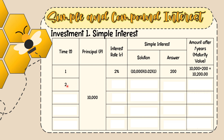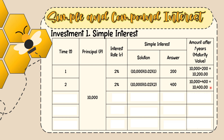For year 2, same principal of 10,000 with 2% interest rate, but now time is 2 years. Solution: 10,000 × 0.02 × 2 = 400. So the interest is 400, and the maturity value is 10,000 + 400 = 10,400 pesos after 2 years.